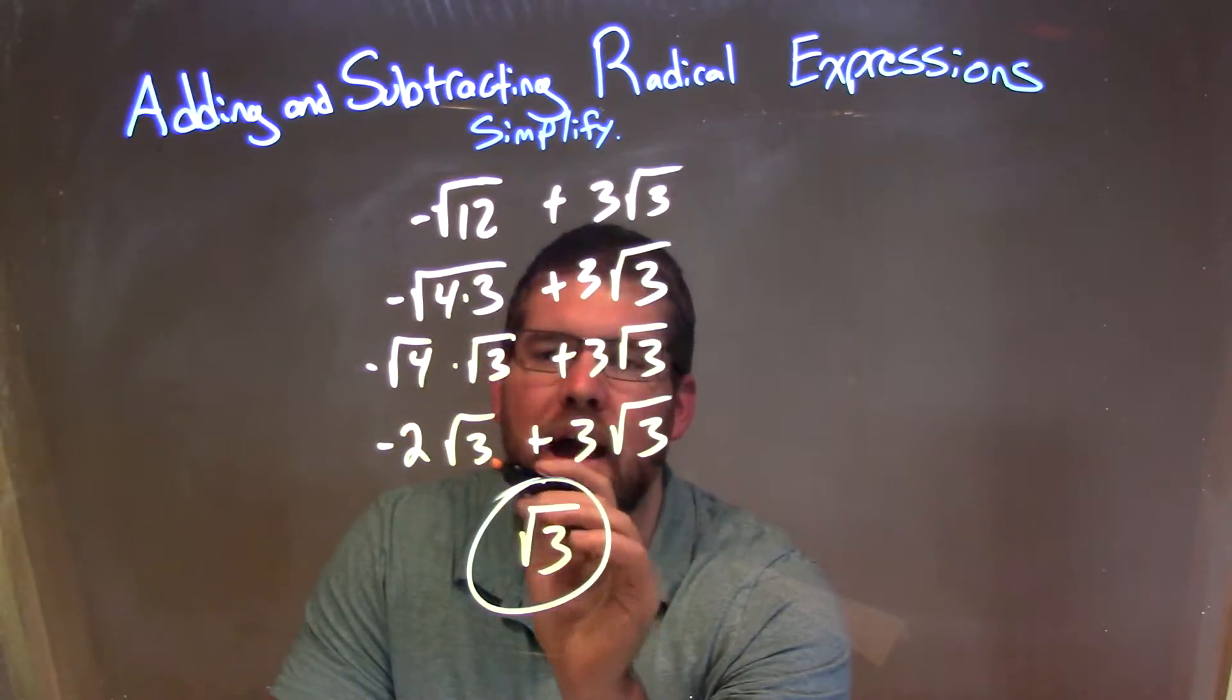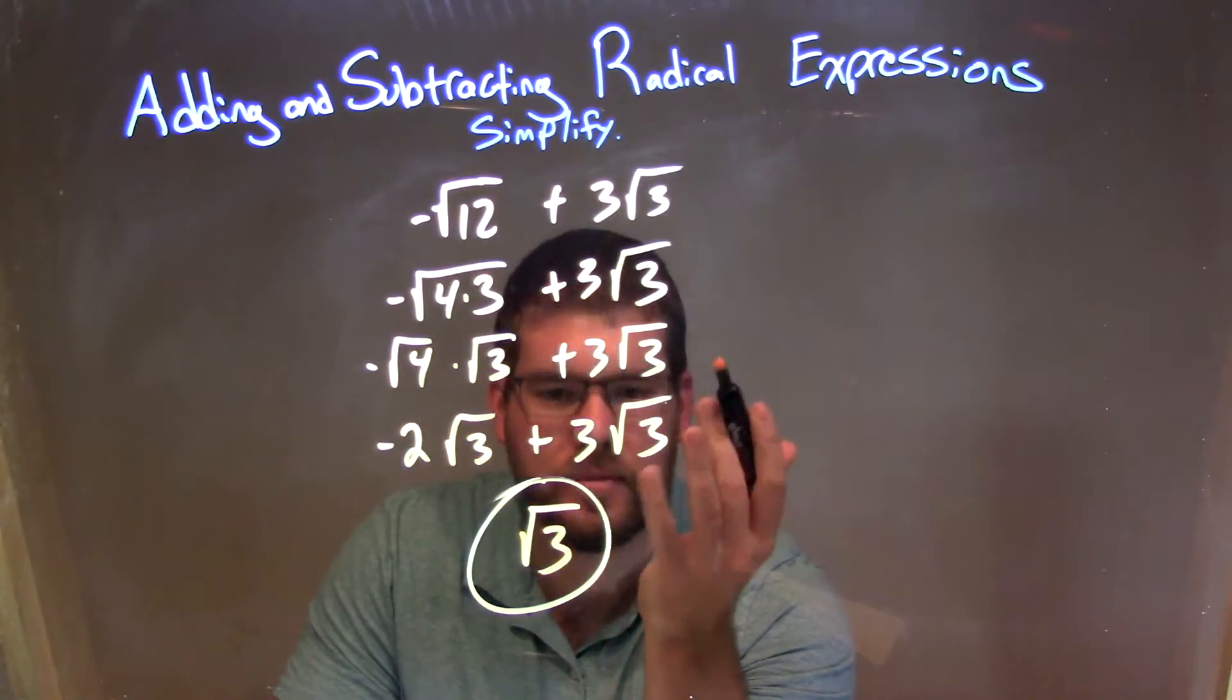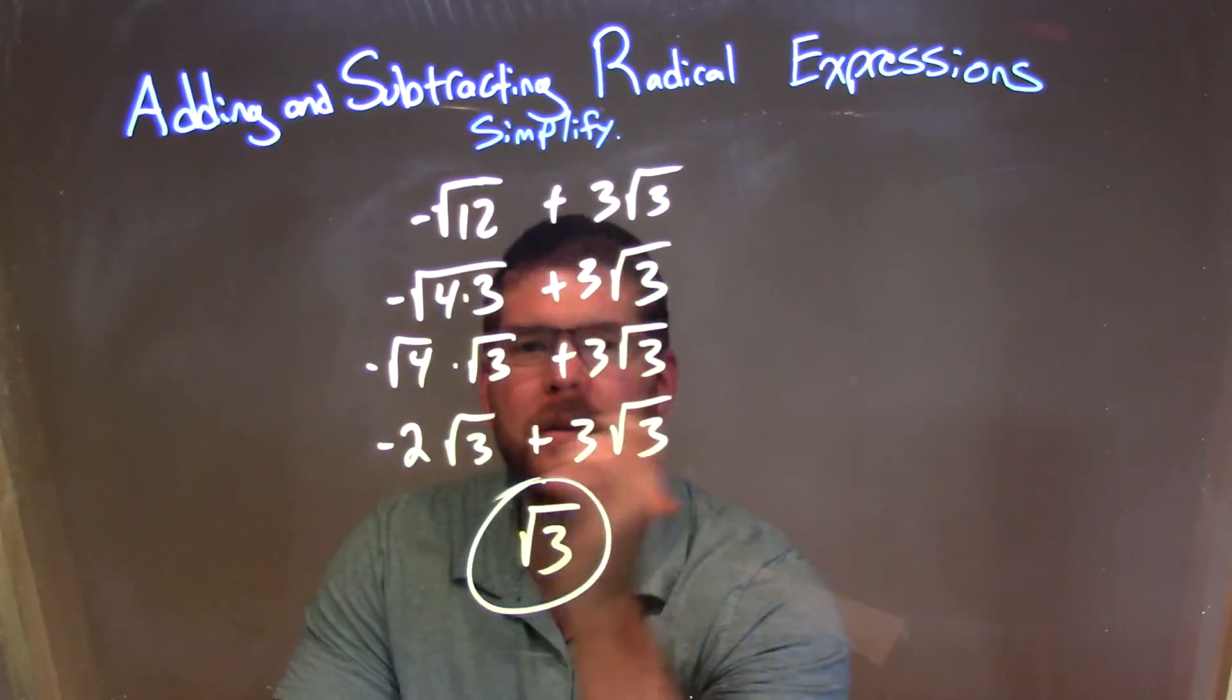There's an imaginary 1 that's right out there. And so with the imaginary 1 out there, we're bringing that square root of 3 just right there. And so our final answer, again, is just the square root of 3.